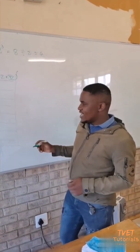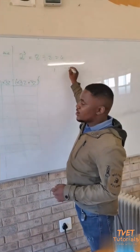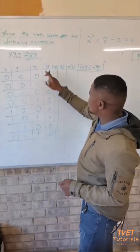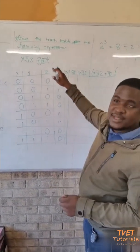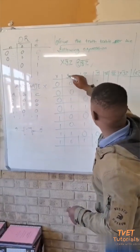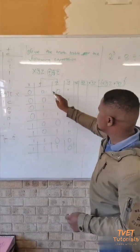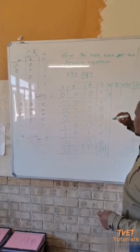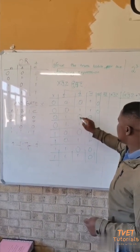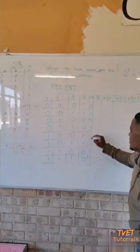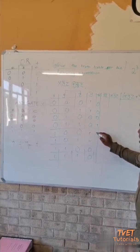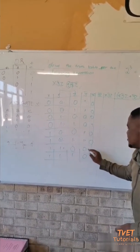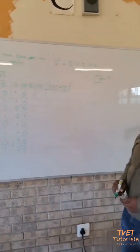We have an AND gate, which means multiplication. For Y-bar and Z: zero and zero gives zero; zero and one gives zero; one and zero gives zero; one and one gives one. Then one and one gives zero when Y-bar is zero; one and zero gives zero; zero and zero gives zero; one and one gives one.